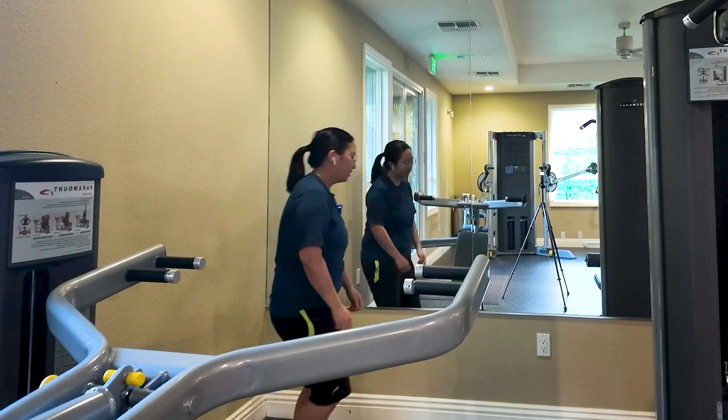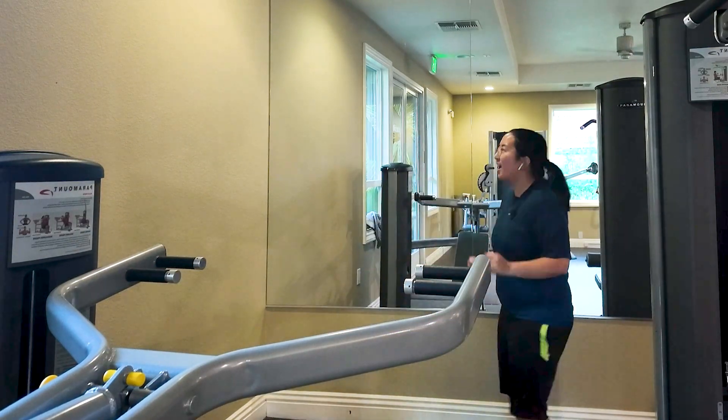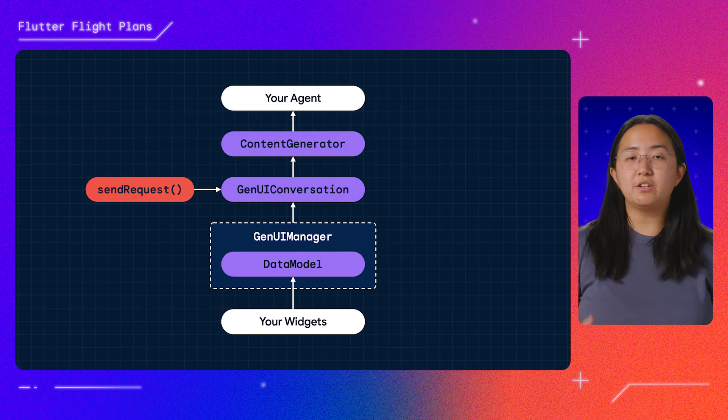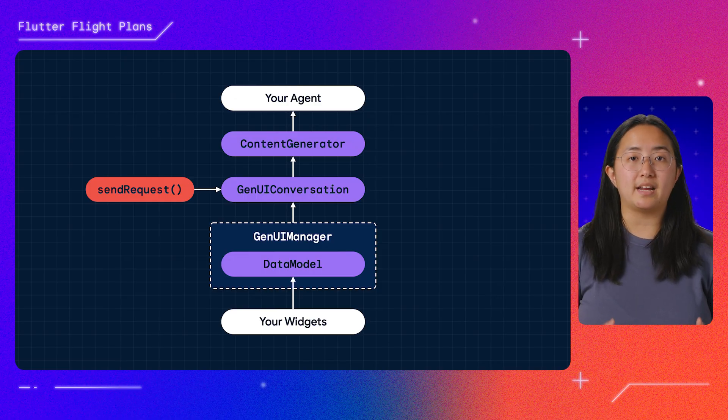I don't always do exactly as many reps as planned — sometimes it's a slow day and I might do less, sometimes I've got my music playlist blasting and I do more. I'd like to make my reps card take input from me as I complete each exercise — how can I record that and send that info up to the agent? The answer is by using the rest of the stack. GenUI manager offers my widgets the tools they need to send events with context back up the chain to the agent. Let's get back into the editor.